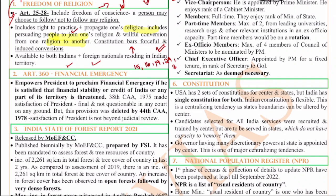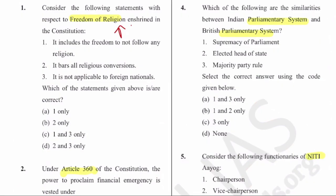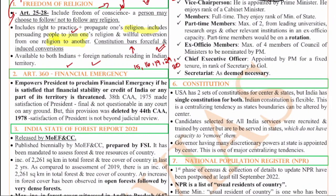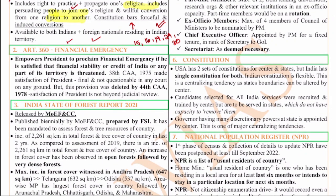The second question is on Article 360. We have three kinds of emergencies: national emergency, state emergency, and financial emergency. Article 360 talks about financial emergency. This financial emergency is proclaimed by the President of India, and till now we have not had a single financial emergency.